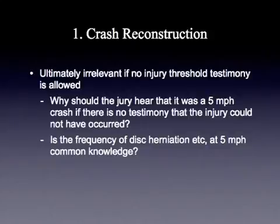In other words, if this was a 5 mile per hour crash versus a 10 mile per hour crash, how can a jury make the expert determination of whether or not somebody was hurt as a result of a 5 mile per hour crash versus whether they would have been hurt in a 10, or a 7 versus a 5, or a 3 versus a 5? They don't have the expert ability to make such a determination — and in fact, of course, the expert doesn't have that ability either.